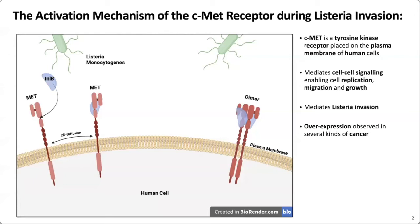Listeria monocytogenes is an intracellular bacterium that exploits the invasion protein internalin B, which binds to the C-MET receptor and ultimately leads to internalization of the bacterium. What we don't know is how this happens. The big aim of my project is to understand the activation mechanism by this invasion protein, internalin B. Our hypothesis is that once bound to the C-MET receptor, the receptor is forced to assume an active conformation making it more favorable for homodimers to form. Once dimers have formed, at the level of the cytosolic tyrosine kinase domains, the signaling cascade can be triggered and internalization can happen.